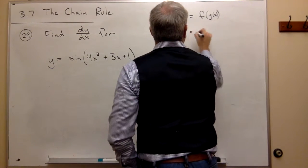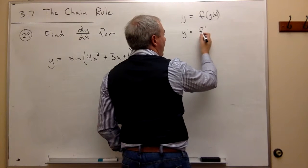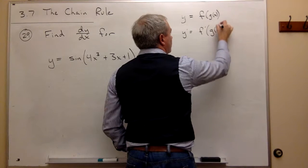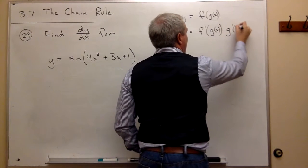then the derivative is going to be take the derivative of f with g of x left alone, and then multiply that by the derivative of g of x.